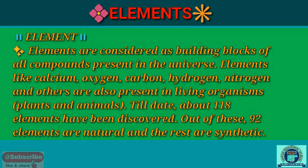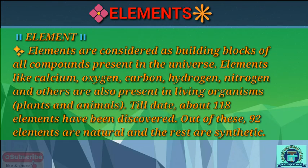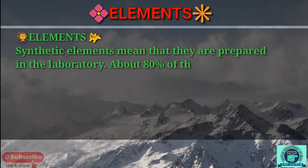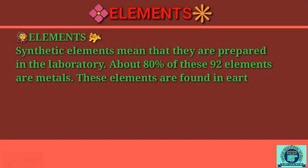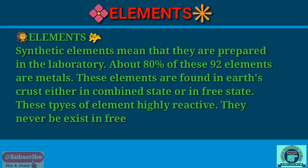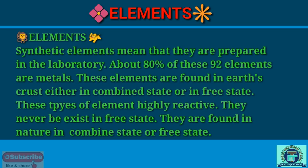Elements are considered the building blocks of all compounds present in the universe. Elements like oxygen, carbon, hydrogen, calcium, and nitrogen are also present in living organisms like plants and animals. Till date, about 118 elements have been discovered. Out of these, 92 elements are natural and the rest are synthetic, meaning they are prepared in the laboratory. About 80 percent of these 92 elements are metals.